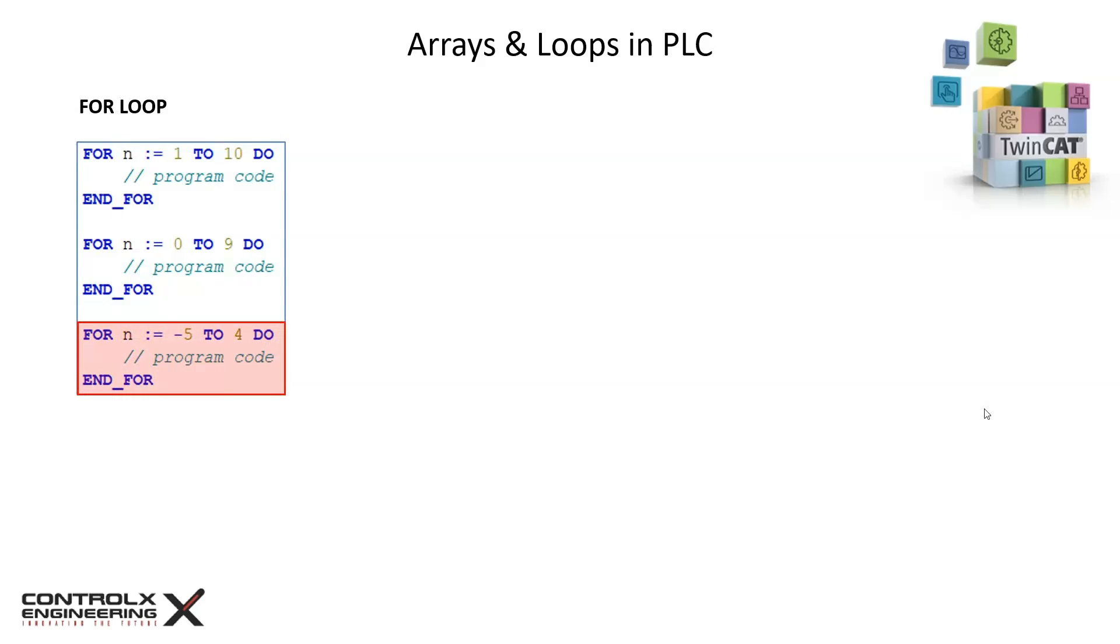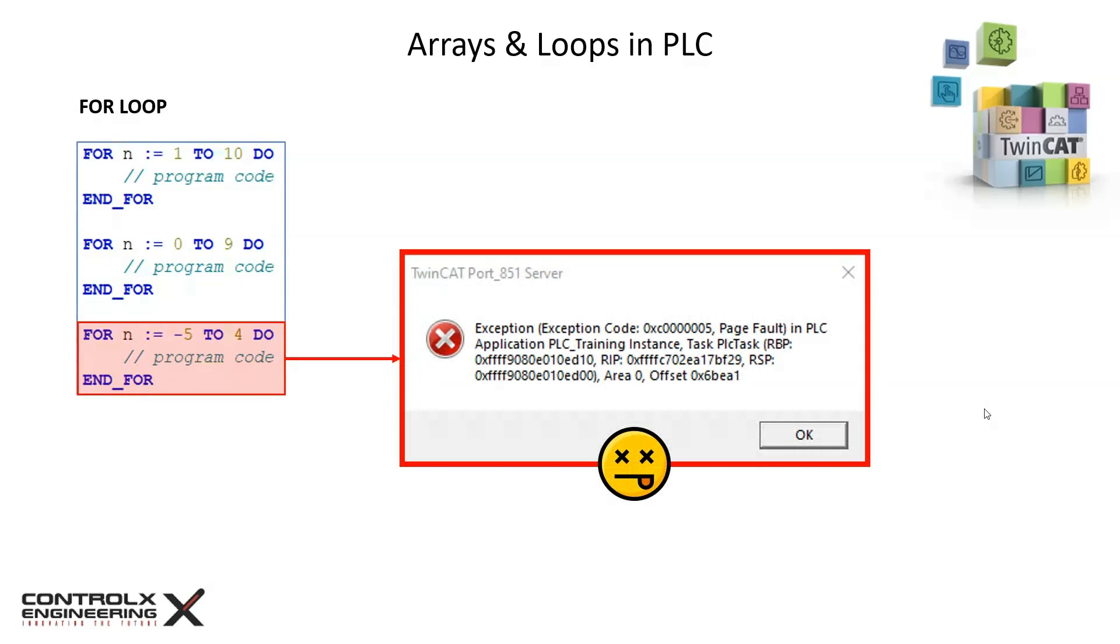When using for loops with arrays, it is important to make sure that the iteration value does not go outside the valid range or the index values of the array. Doing so will lead to a PLC exception during runtime. The only recovery option at this stage will be a power cycle.